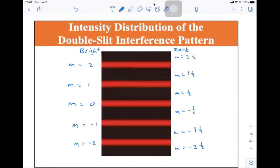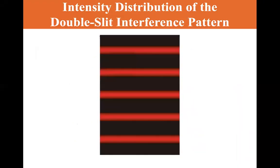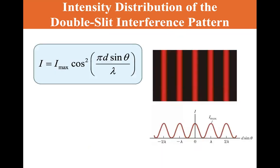Now let's get back to the PowerPoint, which is right here. It's the same image — I just can't write on this; I can do it on my iPad, not on this. So this is what the image looks like, and note that the edges of the bright fringes in the figure, they're not sharp. There's a gradual change from bright to dark. So we consider the distribution of the light intensity associated with the double slit interference pattern in this section.